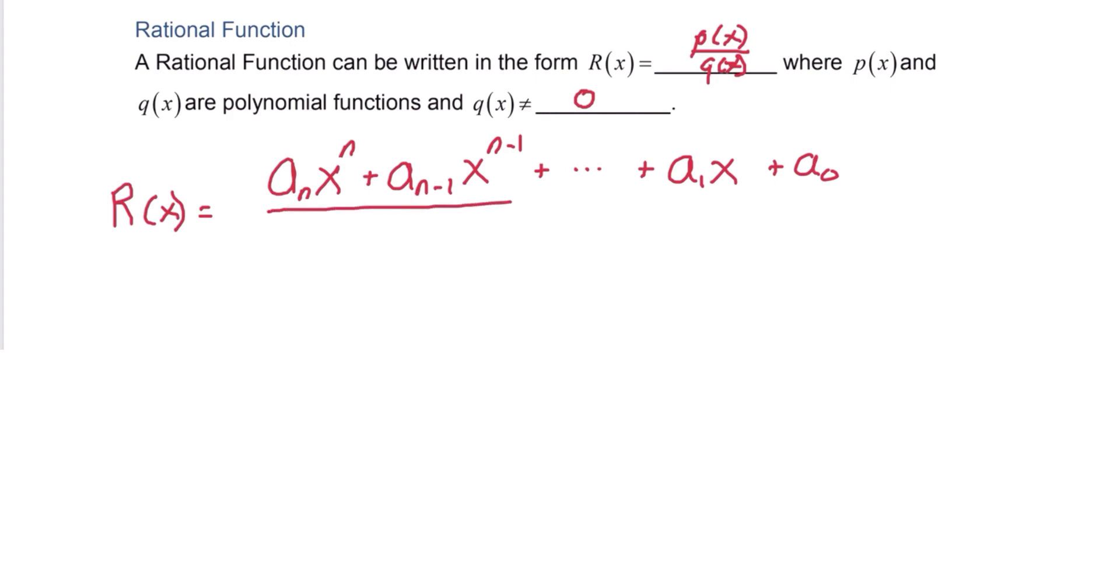And now we're just going to divide that by another generic polynomial. Let's call that b sub m x to the n plus b sub n minus 1 x to the n minus 1, and that will continue down to b sub 1 x plus b sub 0.